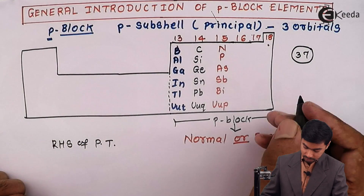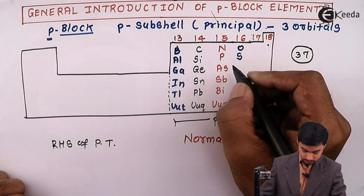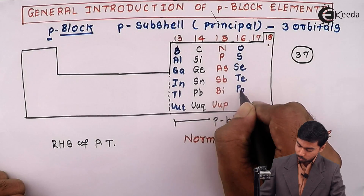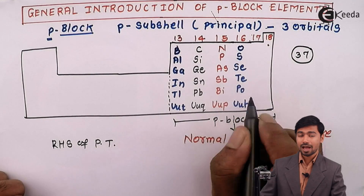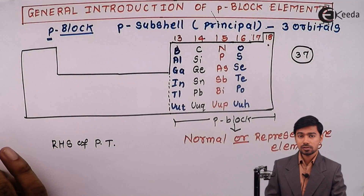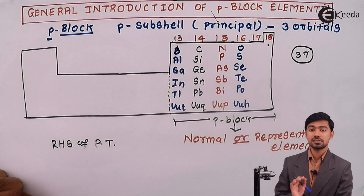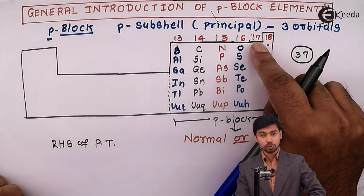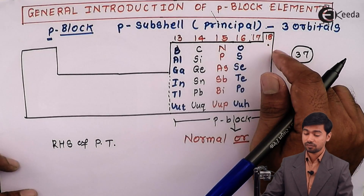The elements of group 16 are Oxygen, Sulphur, Selenium, Tellurium, Polonium, and Ununhexium. As with groups 13 through 15, each group is named after its first element. Since group 16 starts with Oxygen, it is called the Oxygen family.